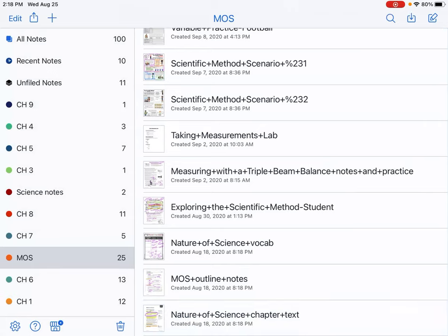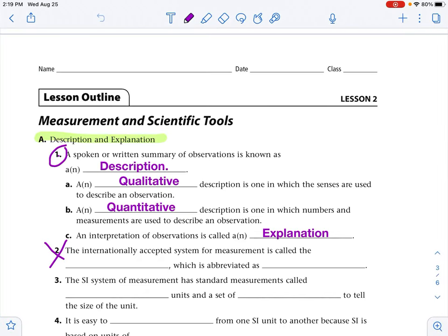So we're at the end of this section. So we are going to go to our outline notes and fill in just what we did for description and explanation. So a spoken or written summary of observations is known as a description. A qualitative description is one in which the senses are used to describe an observation. So what does it look like? What does it smell like? What does it feel like? What does it taste like? What does it sound like?